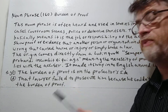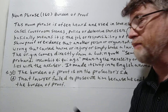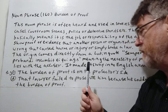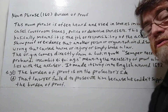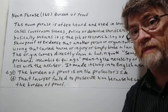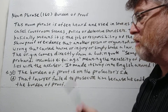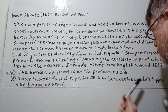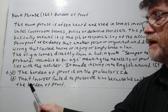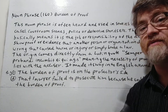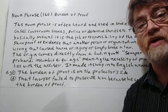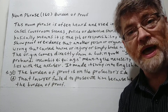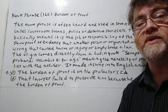We have two examples to cover this. Example number one: 'The burden of proof is on the prosecutor's side.' Number two: 'That lawyer failed to prosecute him because he couldn't supply the burden of proof' — he didn't have enough proof or enough evidence to get a conviction. Anyway, I hope you got it, hope it's clear and informative. Thank you for your time.